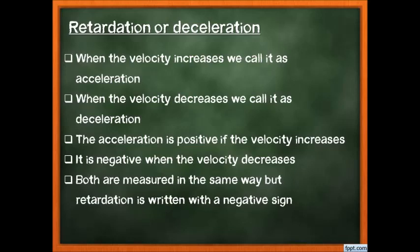Now, retardation or deceleration: when velocity was high and the car gradually slows down, there is a change in velocity — but from high to low. It is still acceleration, but we give it a different name: retardation or deceleration. When velocity increases, it is acceleration; when velocity decreases, it is deceleration.